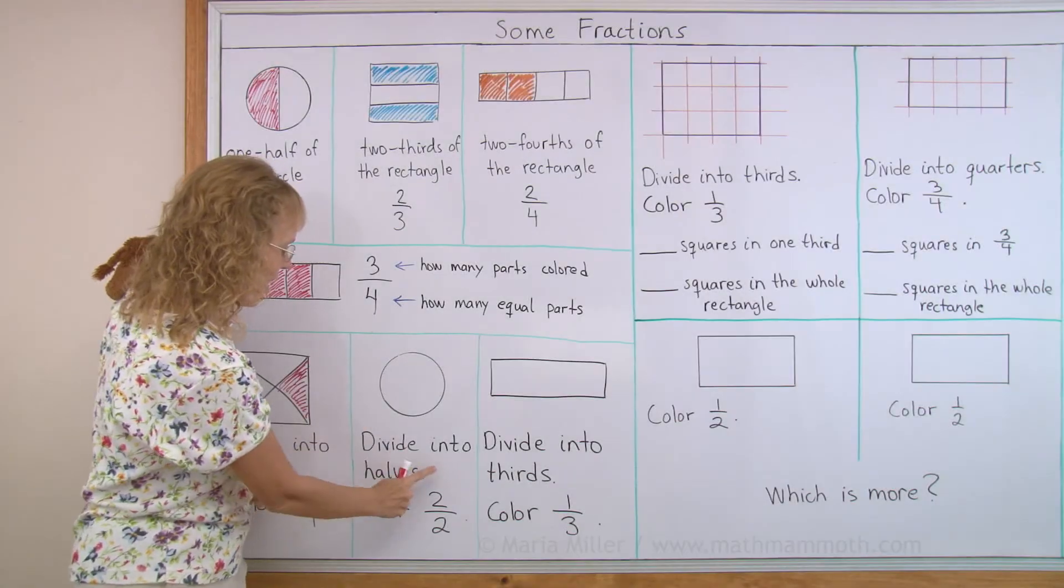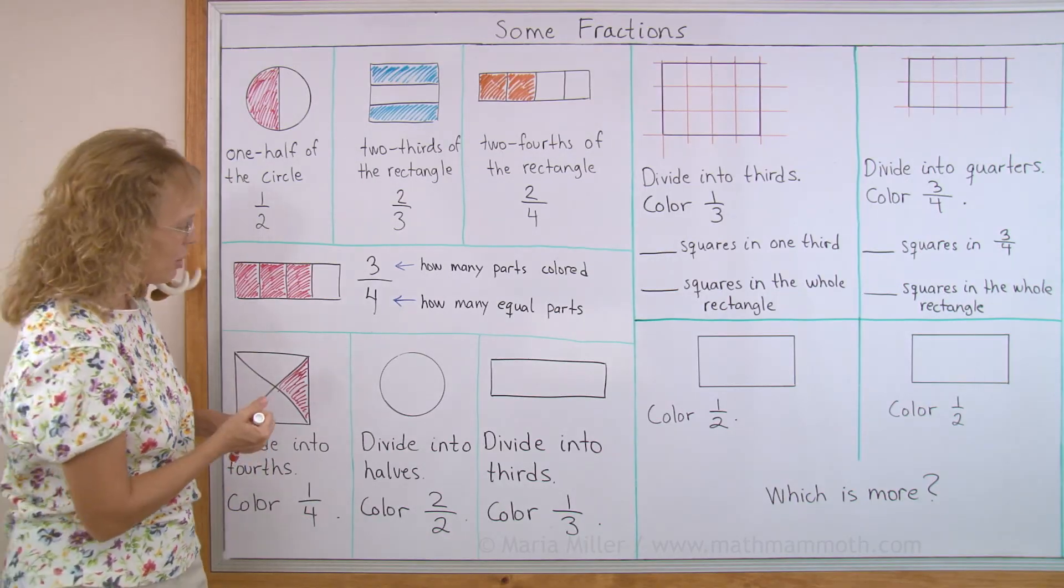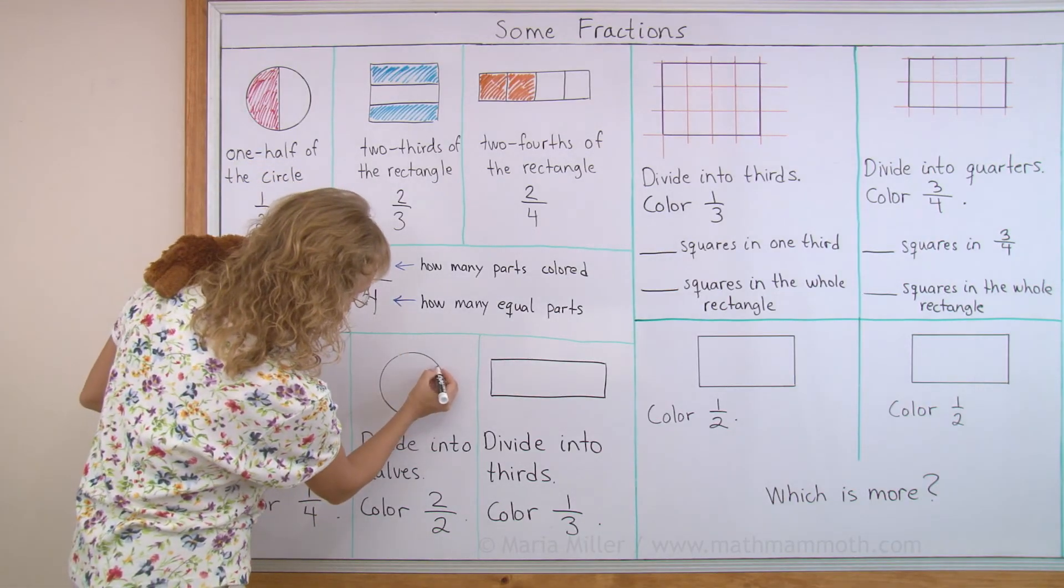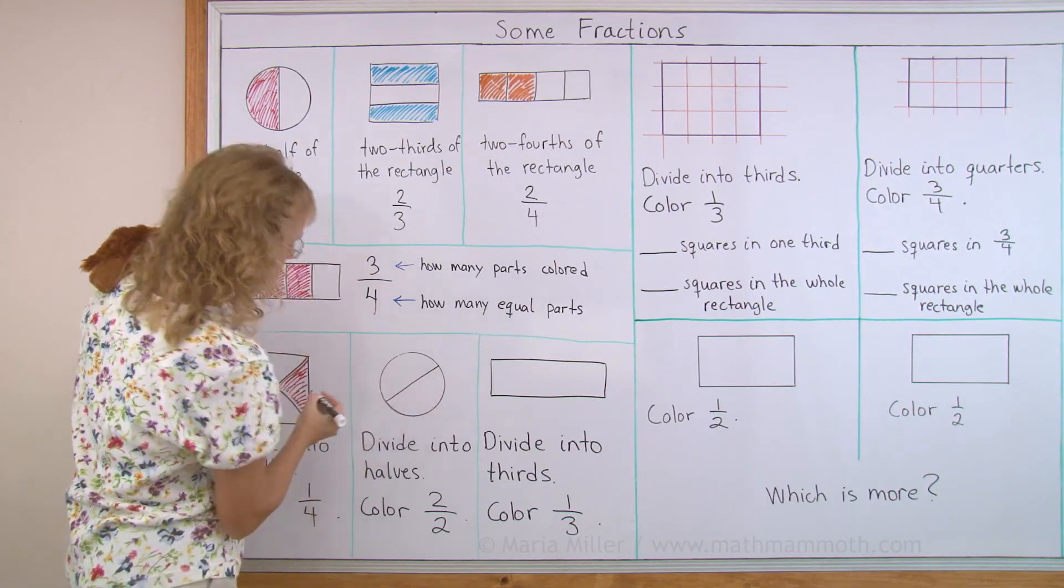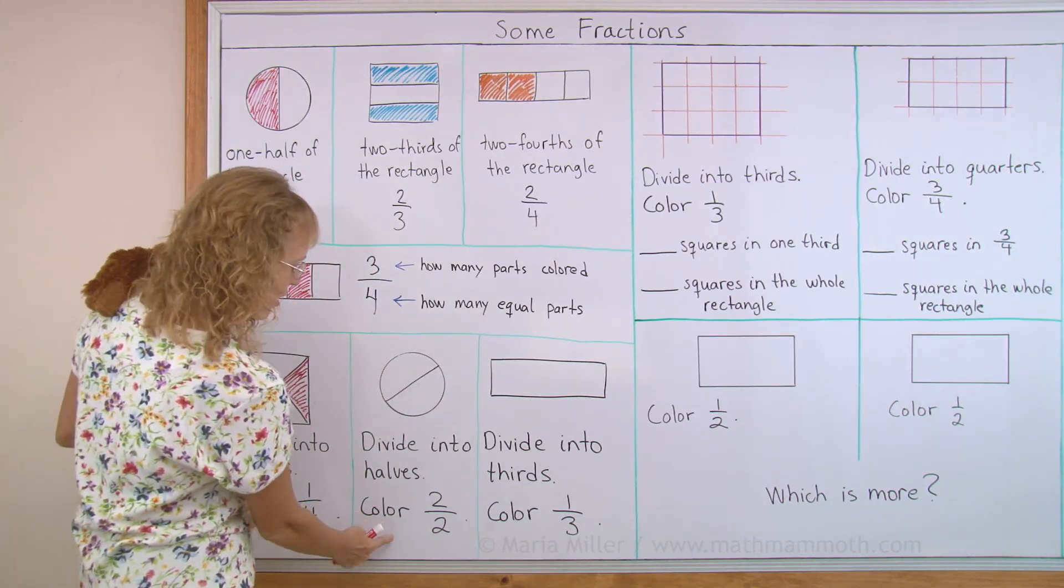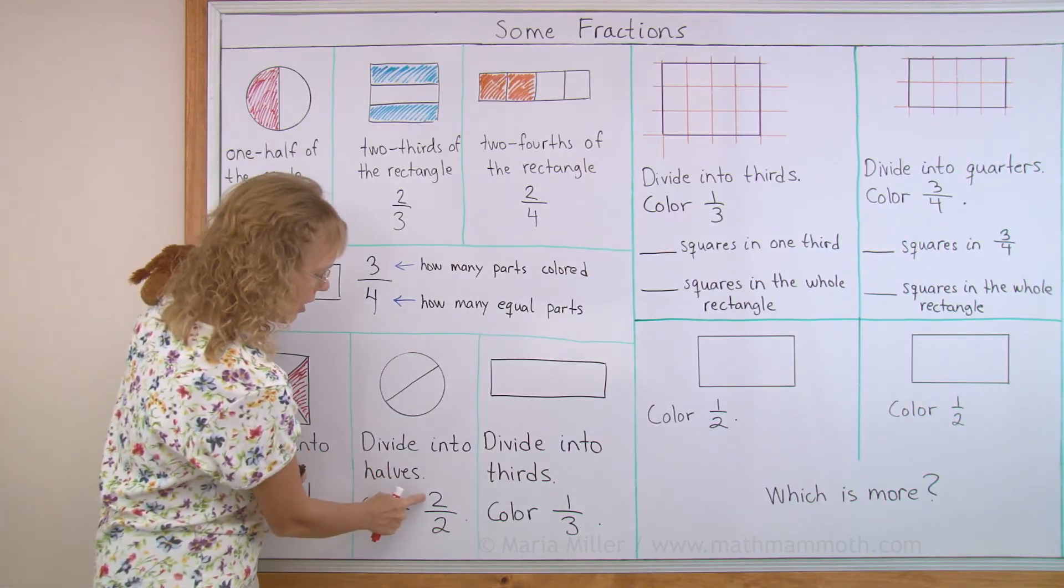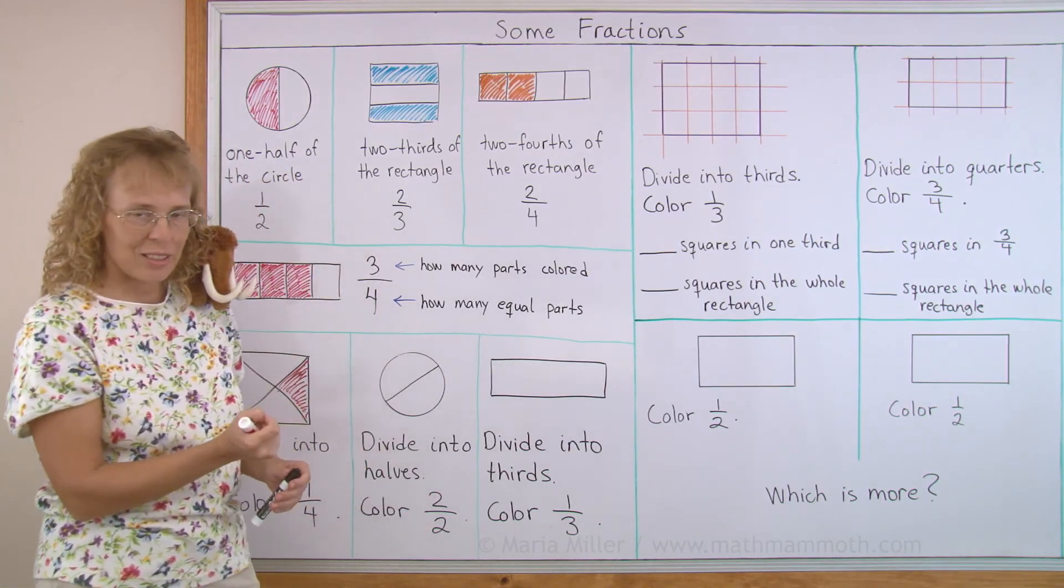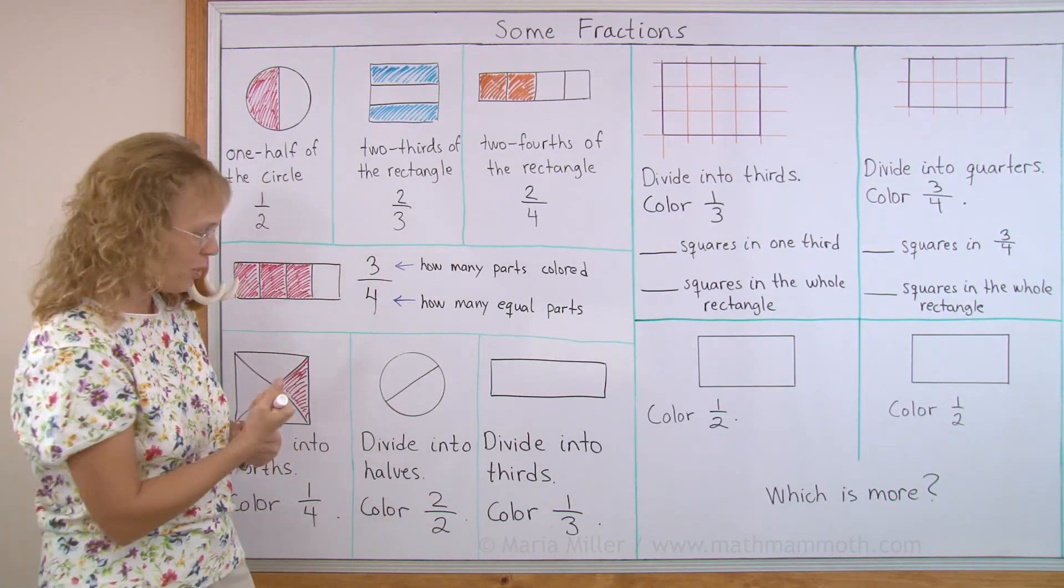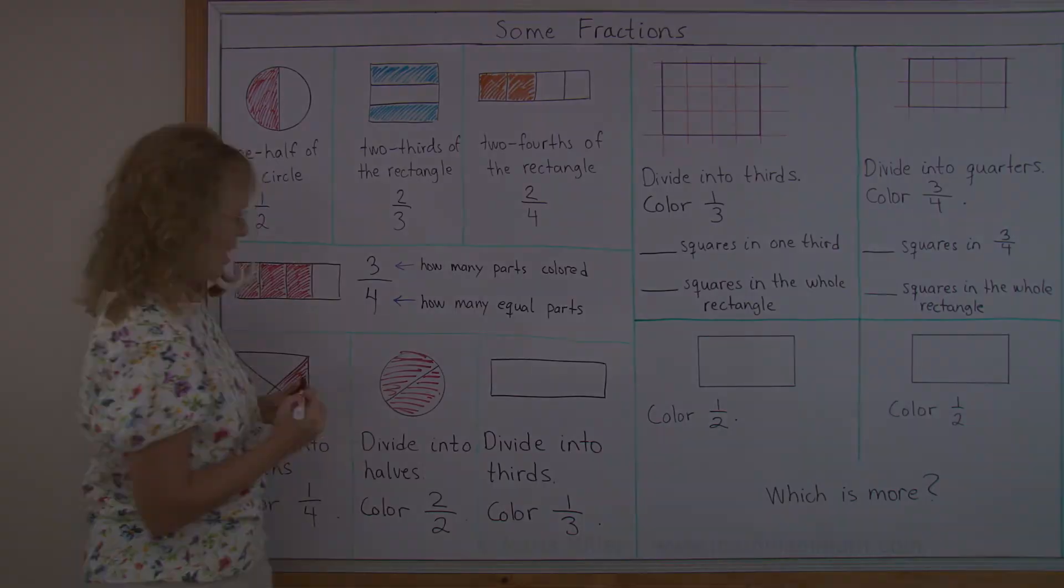Over here divide the circle into halves, so that means two equal parts, like that. And then color, what's that fraction? What do we color now? Two halves. We color two parts of the two. So I need to color the whole thing like that.